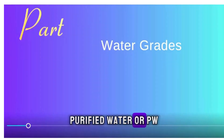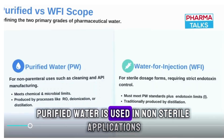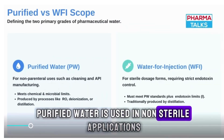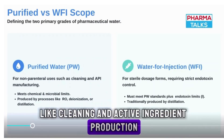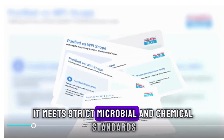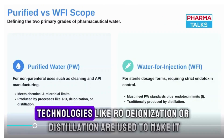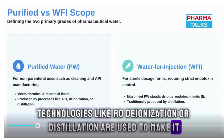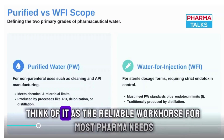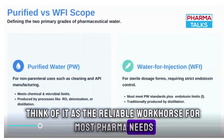Purified water, or PW, is used in non-sterile applications like cleaning and active ingredient production. It meets strict microbial and chemical standards. Technologies like RO, deionization, or distillation are used to make it. Think of it as the reliable workhorse for most pharma needs.